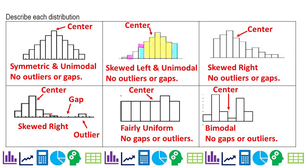Most of these are actually medians. Catch where the symmetry is - symmetric, skewed left, skewed right. Skewed right with an outlier and a gap. There is the center, and this is fairly uniform, no gaps or outliers. And this one is bimodal because it has two peaks.